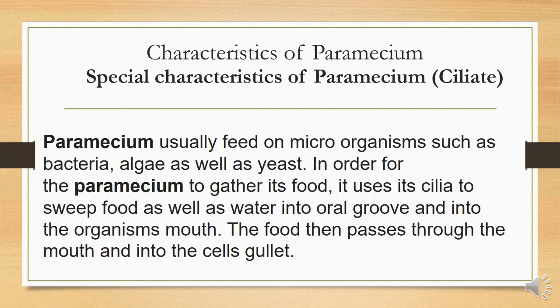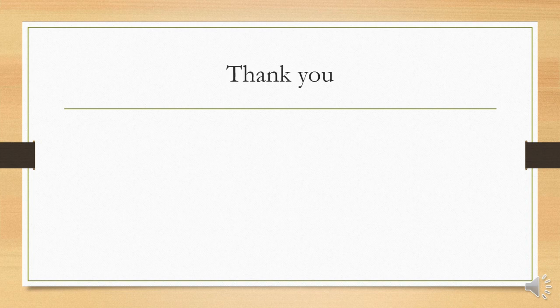The special characteristics of paramecium is that they feed on microorganisms such as bacteria, algae, and yeast. In order for the paramecium to gather its food, it uses its cilia to sweep food and water into the oral groove and into the organism's mouth. The food then passes through the mouth and into the cell's gullet.